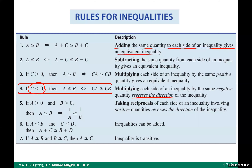For example: 2 less than 3. If you multiply by a positive number, say 2, you get 4 less than 6 — still valid. But if you multiply by negative 2, you get negative 4 and negative 6. Is negative 4 less than negative 6? No — negative 4 is greater than negative 6. This is why you must reverse the inequality when you multiply by a negative number.